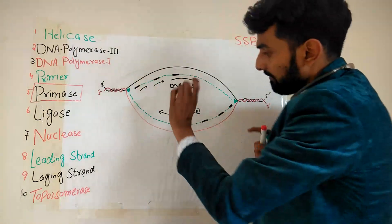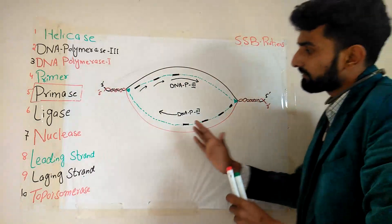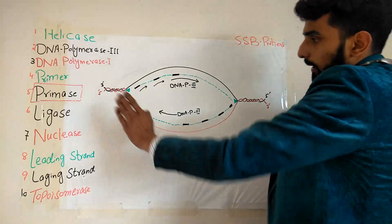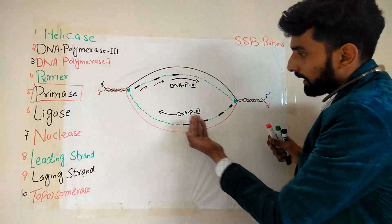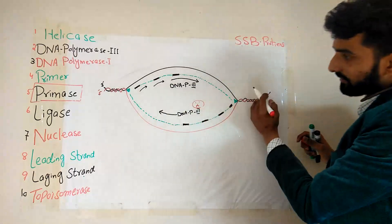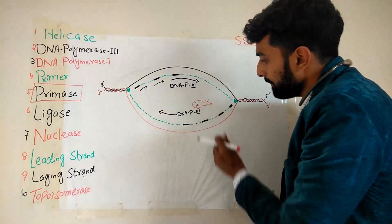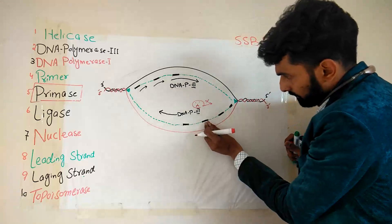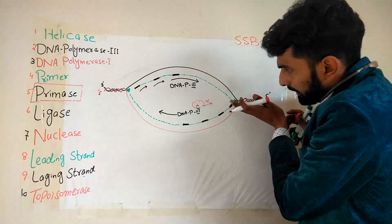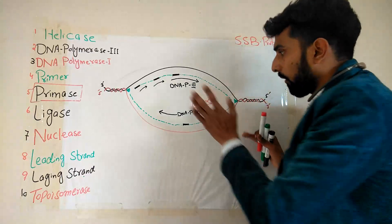Similarly, the same goes for this strand. DNA polymerase will move in this direction. First, a primer will be added by the primase enzyme, then DNA polymerase will start adding nucleotides, moving in the 5' to 3' direction. DNA polymerase cannot move in the other direction, so primers come to help, and different primers are added near the replication fork. From these primers, DNA polymerase keeps moving and the lagging strand is formed.